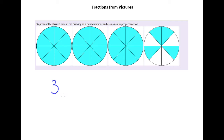Now this last circle here we can see has four shaded pieces, so I know my numerator in my mixed number will be four. And then there are a total of eight pieces altogether, so we get three and four eighths.